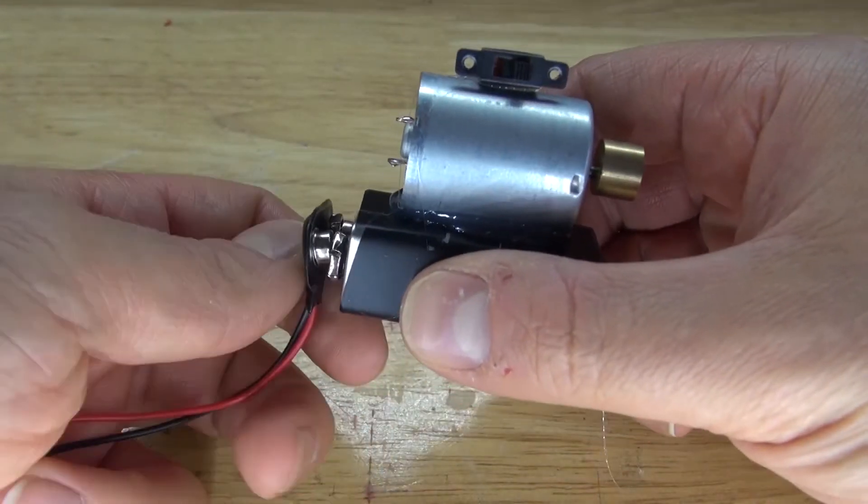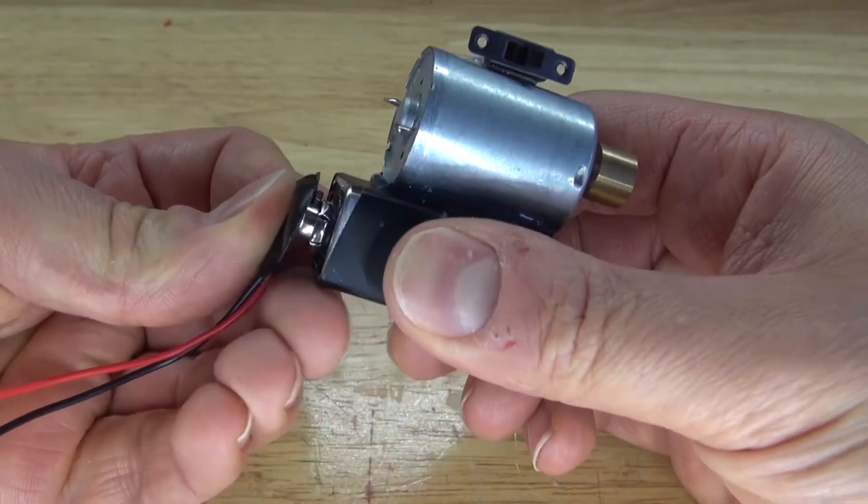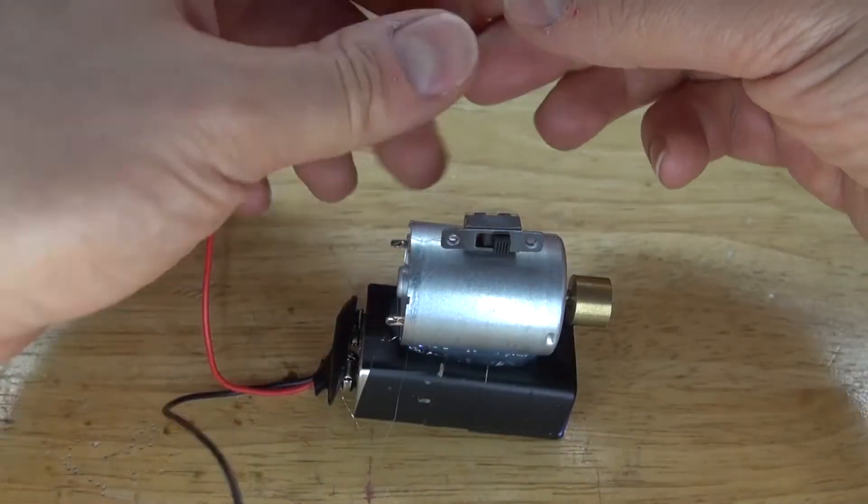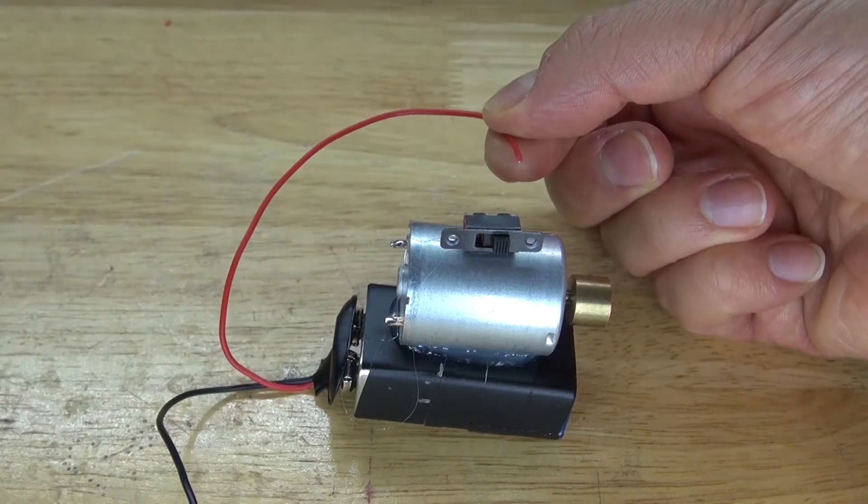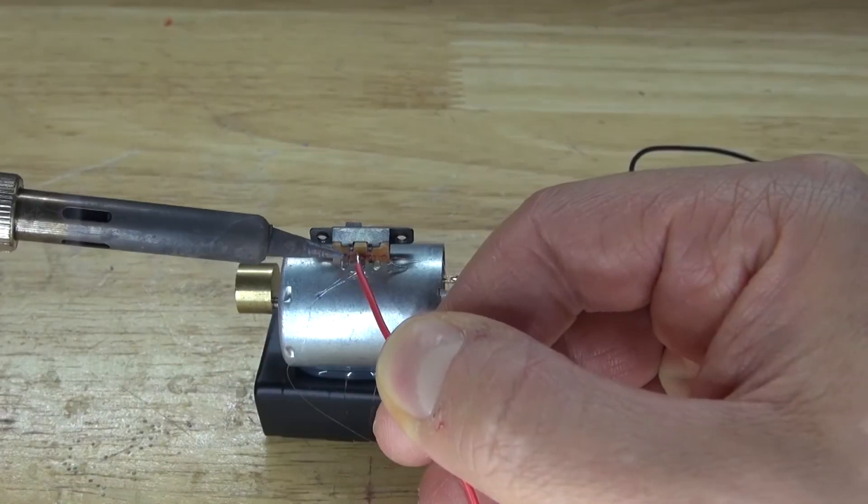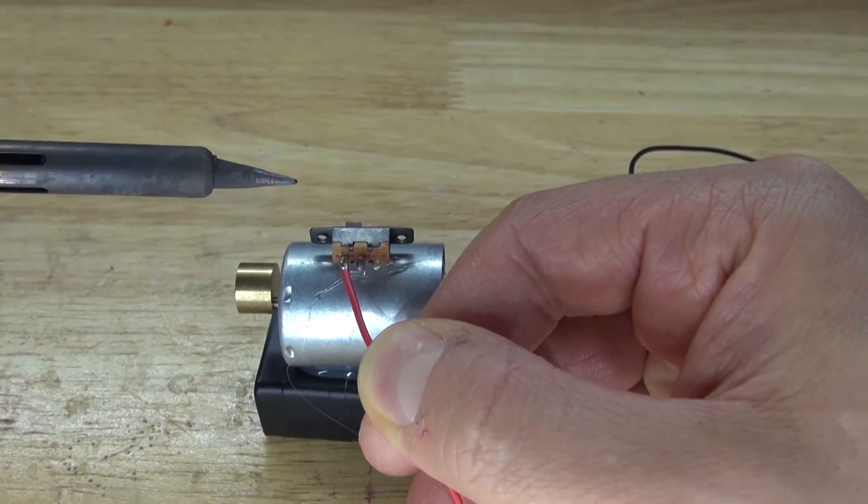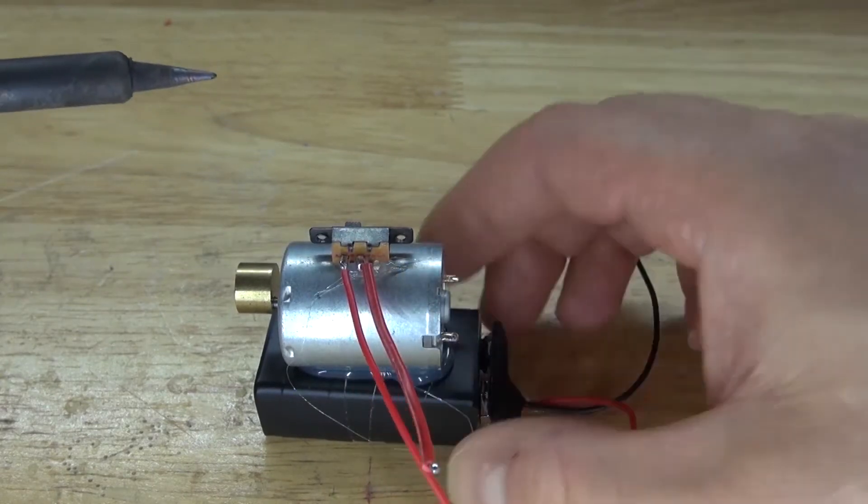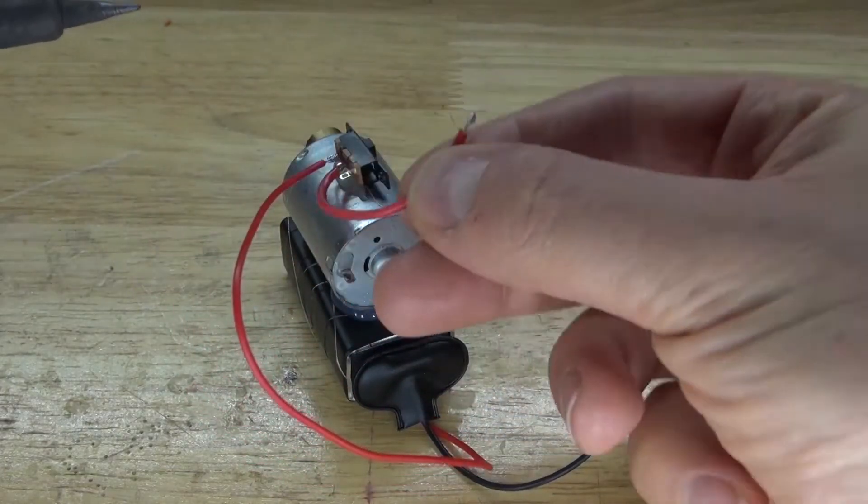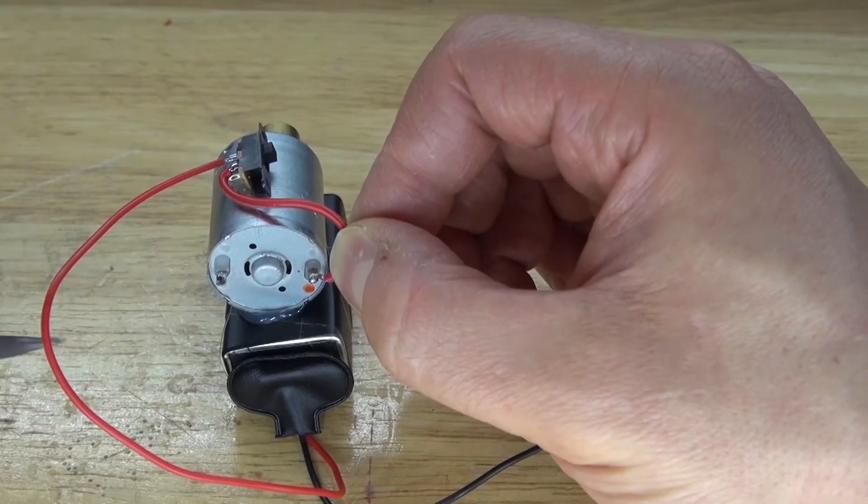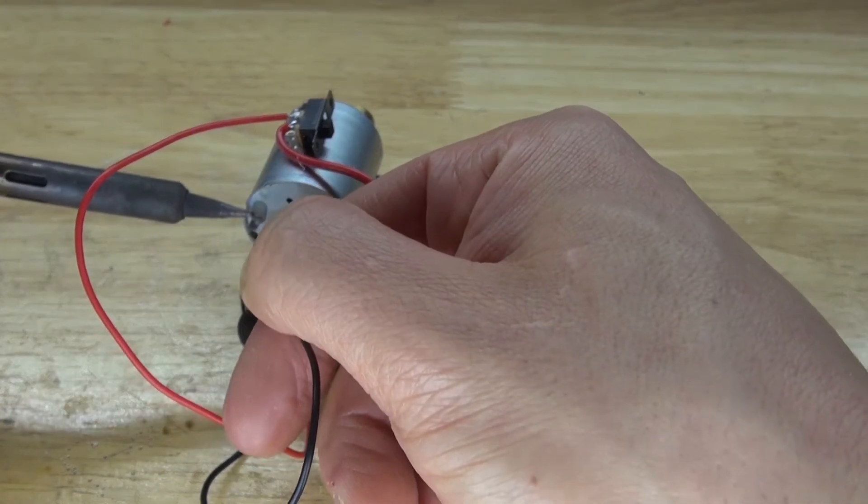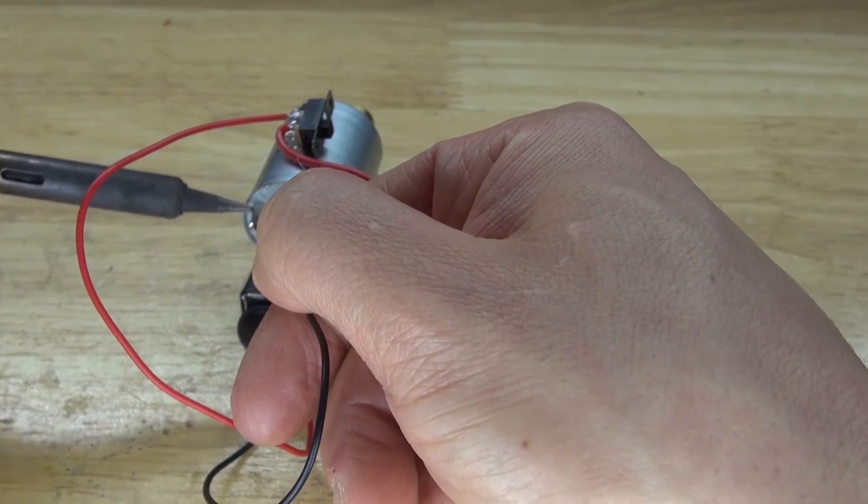And now take the 9-volt battery clip. Connect it to the 9-volt battery. Bend the wires over. And then take the positive of the 9-volt battery clip and solder it to the slide switch. And I'll take this positive wire and solder it to the second pin of the slide switch. And then take that wire and solder it to the positive terminal of the vibrating DC motor. And then take the negative wire and solder it to the negative terminal of the vibrating DC motor.